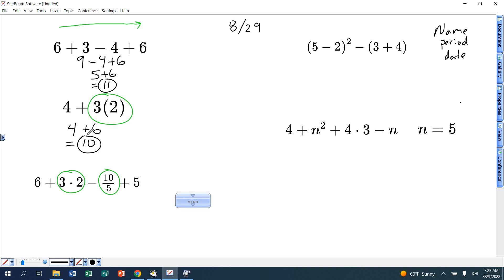For the next one, this one has times and division. So do that first, leaving everything else alone. Bring that 6 down, plus 3 times 2 gives me 6. Bring that minus down, 10 divided by 5 gives me 2. Bring that plus down and that 5 down. And then don't forget to go left to right. Don't add that 6 and 6 and 2 and 5 and subtract that. Left to right. 6 plus 6 gives me 12. Bring down the minus 2 and the plus 5. Continuing left to right, 12 minus 2 gives me 10. Bring that plus 5 down finally, and then that gives me 15.